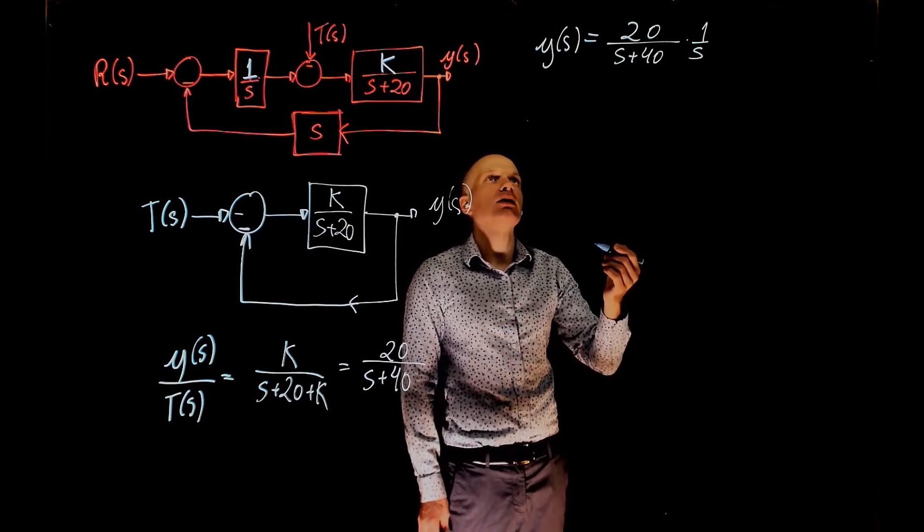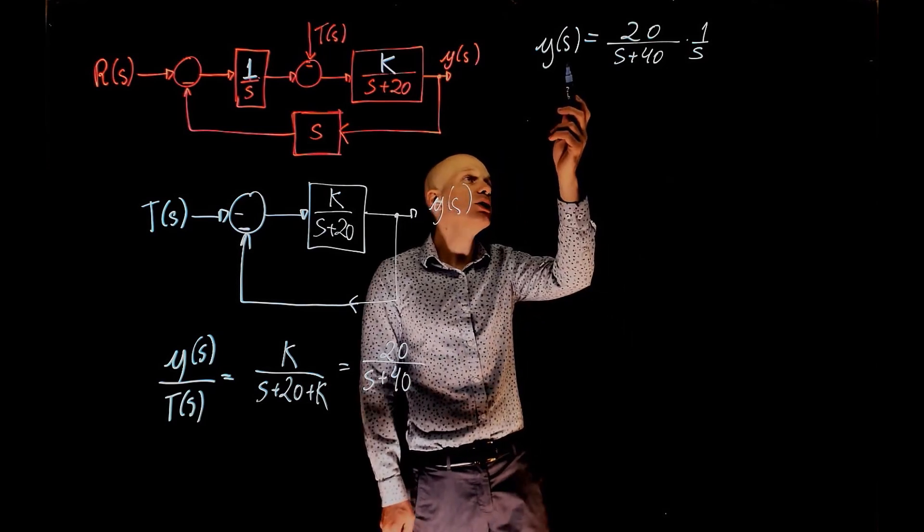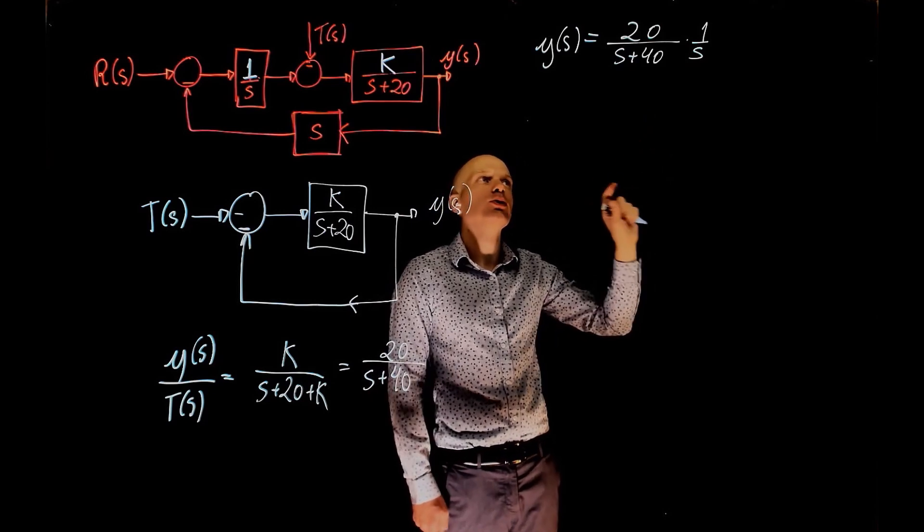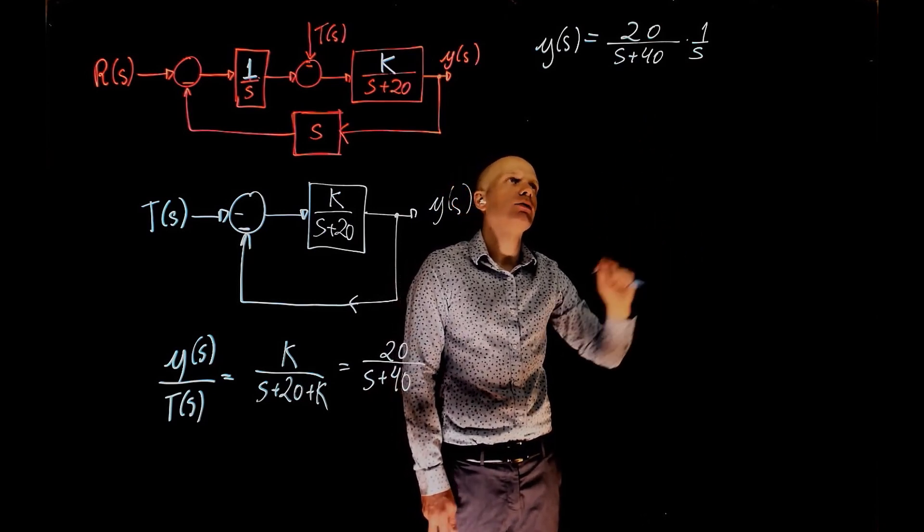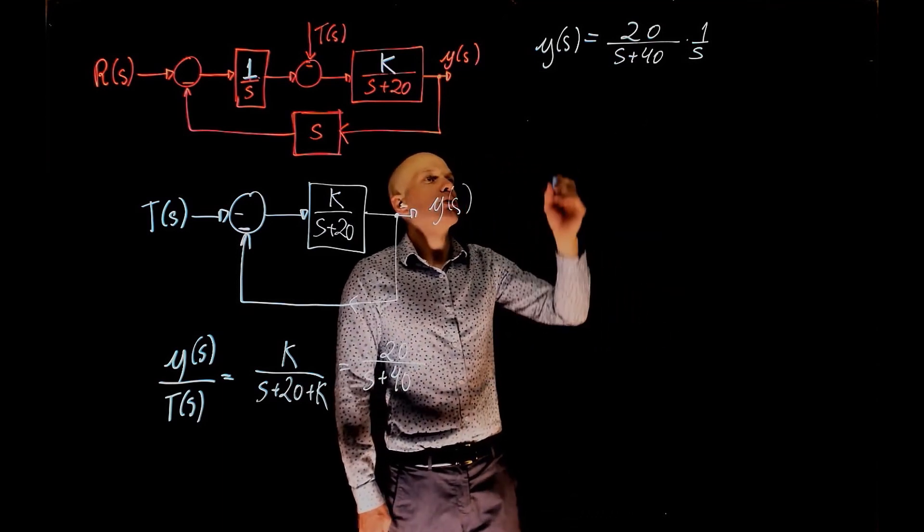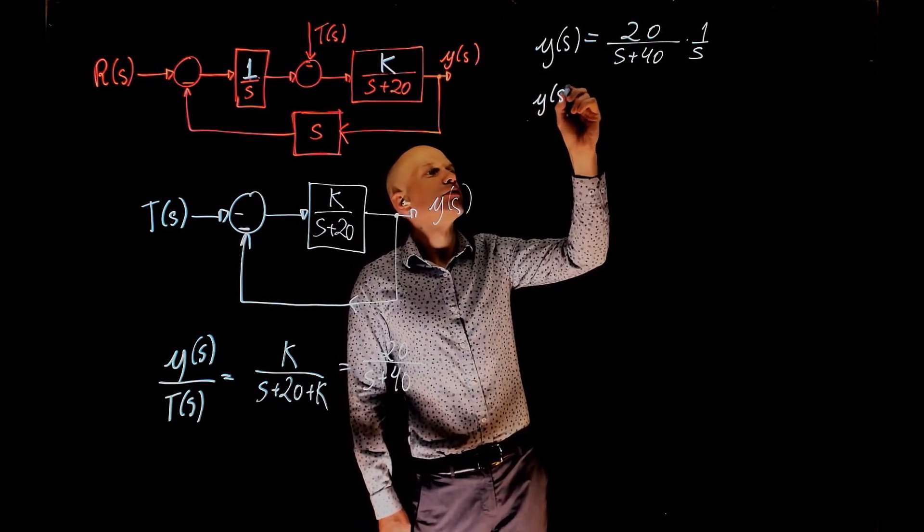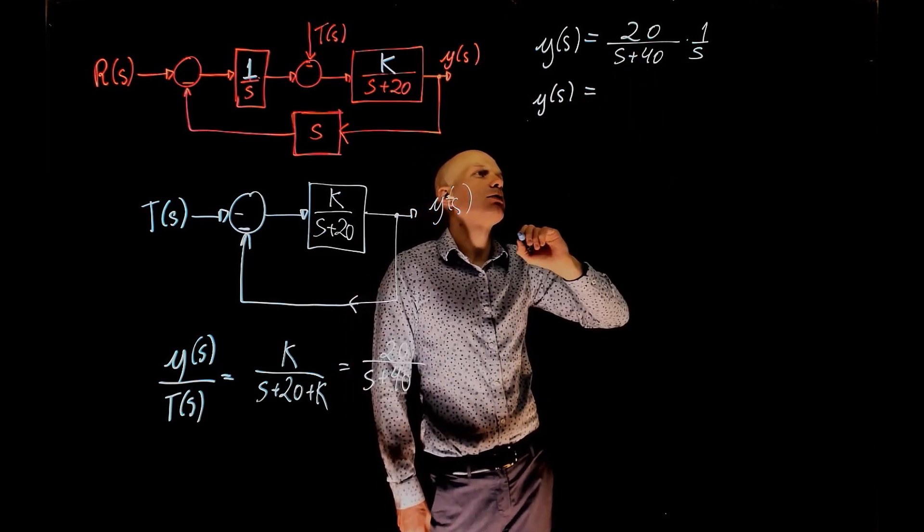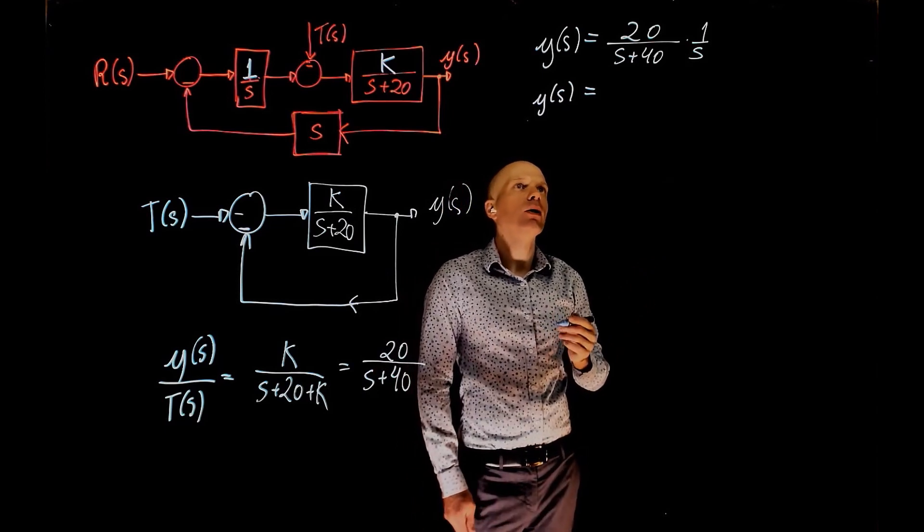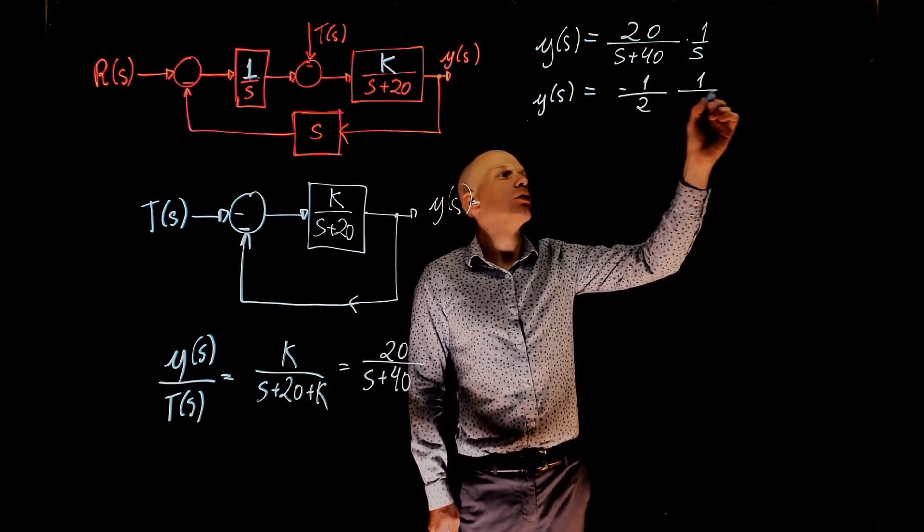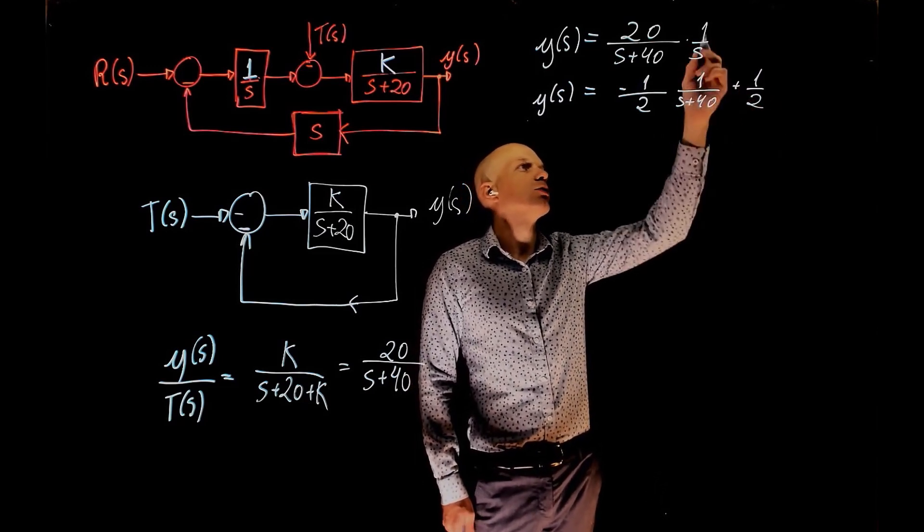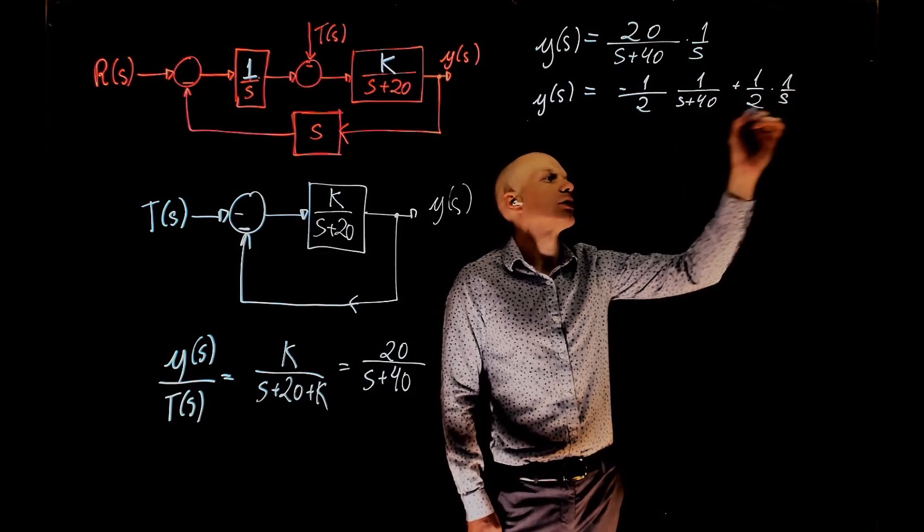So the way you can solve now for the settling time is to find y(t) and then see what is the value of t that will lead to within 2% of the final value. This will require partial fraction decomposition. y(s) is a over (s + 40) plus b over s. And if you solve for a and b, we get the following value: negative 1/2 of 1 over (s + 40) plus 1/2, so this would be 1/2 times 1 over s.